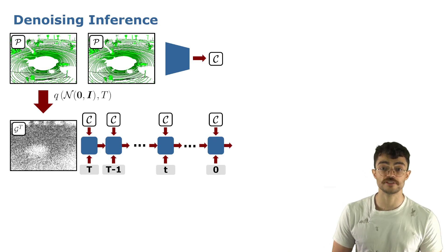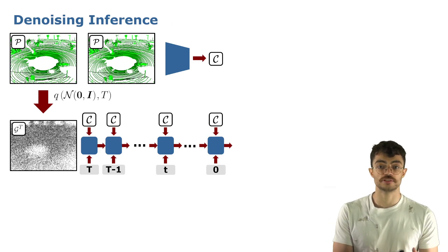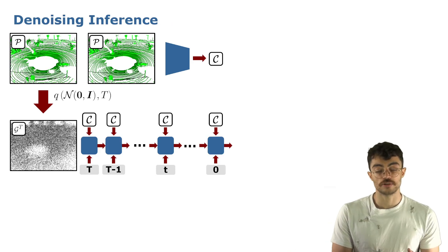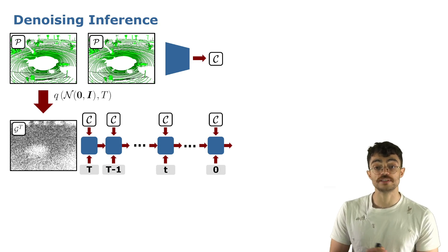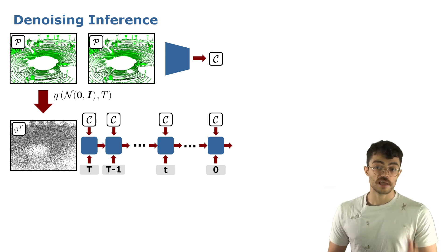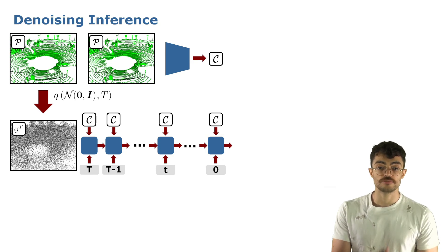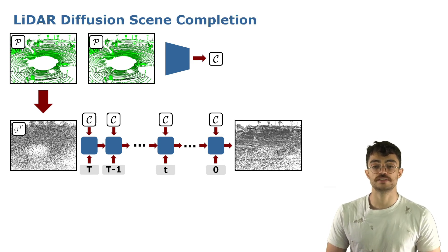During inference, we replace the ground truth with the point cloud from a single LiDAR scan, add the noise to it, and compute all T denoising steps — step by step predicting the noise and removing it from the data — until in the end we arrive at a complete scene representation.